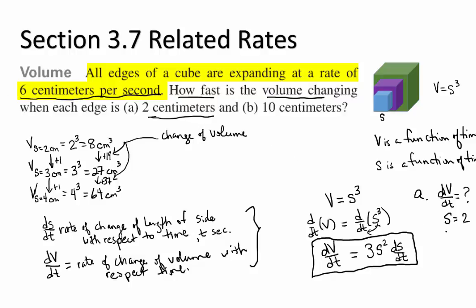What is that? ds dt, right? ds dt is six centimeters per second. So we can plug into this formula to find dv dt.